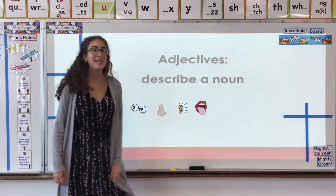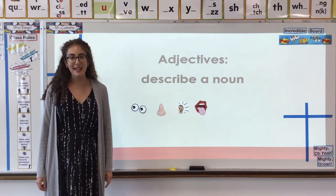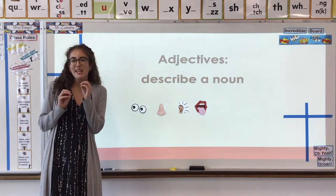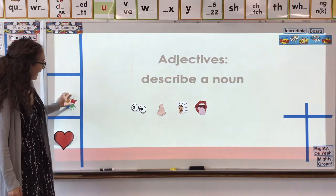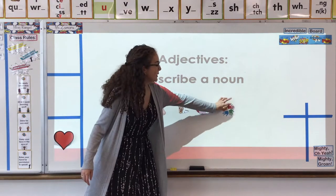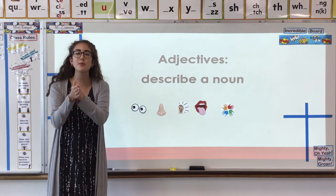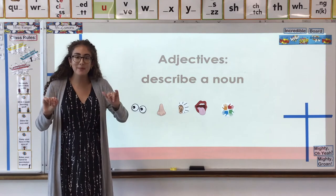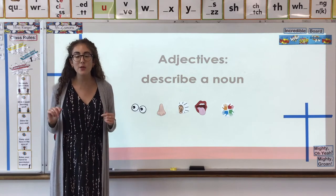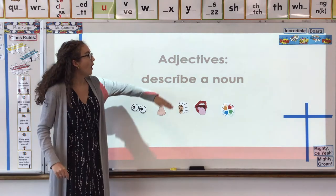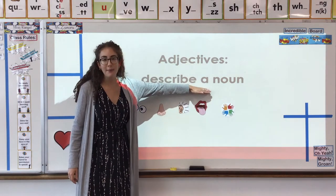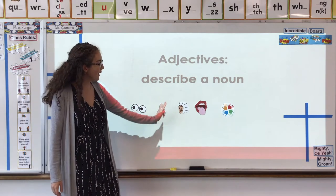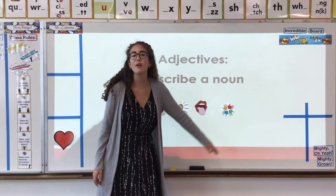What does something taste like? That usually has to do with food. Is it sweet? Is it salty? Is it sour? And what does something feel like, like if we touched it with our hands? Is it soft? Is it rough? Is it prickly? All of these words that we use to answer those questions are adjectives. They're describing a noun, giving more information about what it looks, smells, sounds, tastes, or feels like.